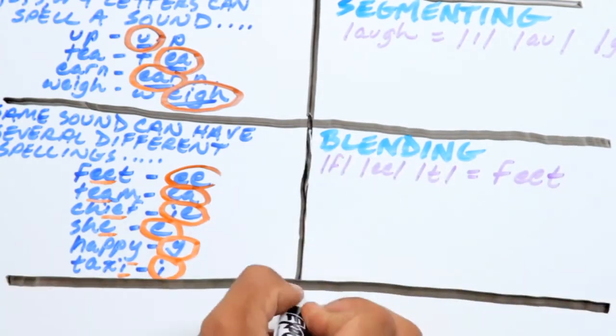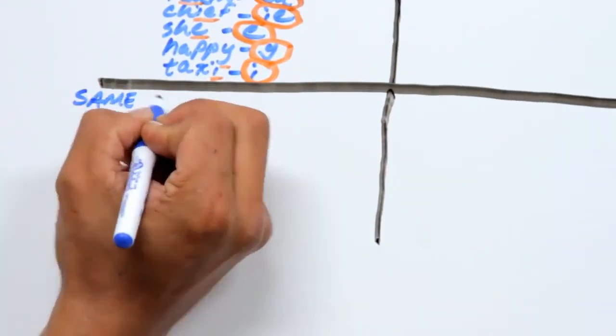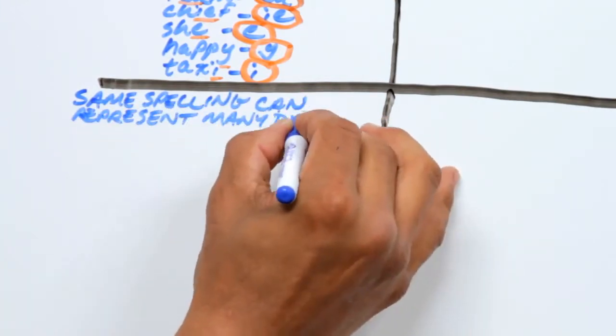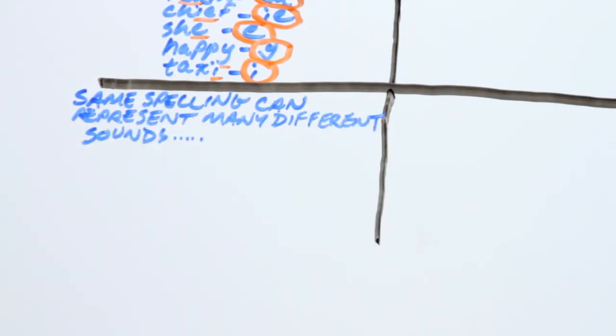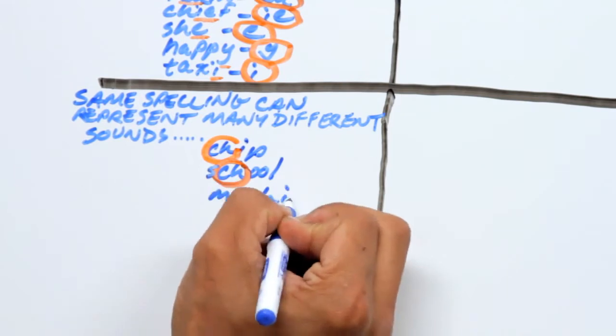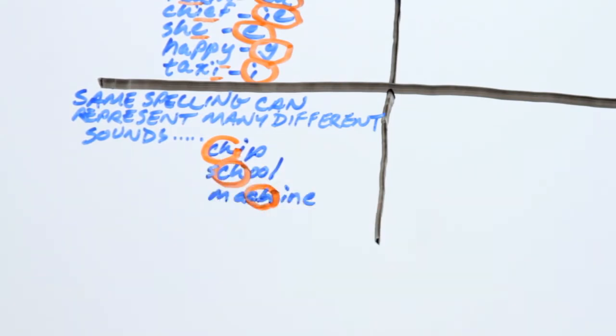The third Eblee concept is, in the English language, the same spelling can represent many different sounds. For example, the sound ch in chip, k in school, and sh in machine.